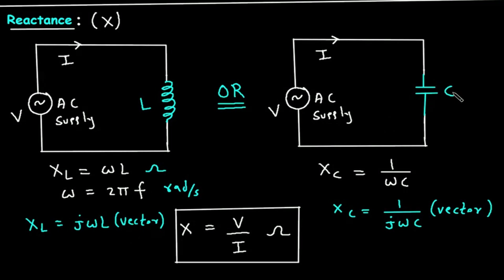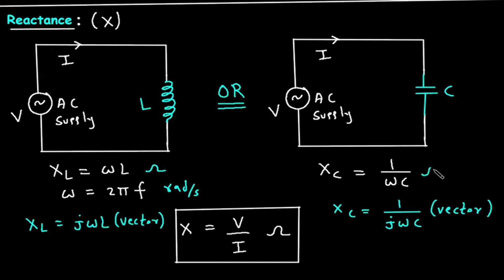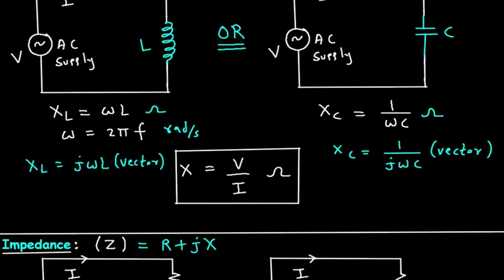If the load is a capacitor, the reactance will be capacitive reactance, denoted by XC, equal to 1 upon Omega C. This is in scalar form. In vector form, XC equals 1 upon J Omega C. The unit is Ohm. Reactance X equals V by I, Ohm — same as resistance.